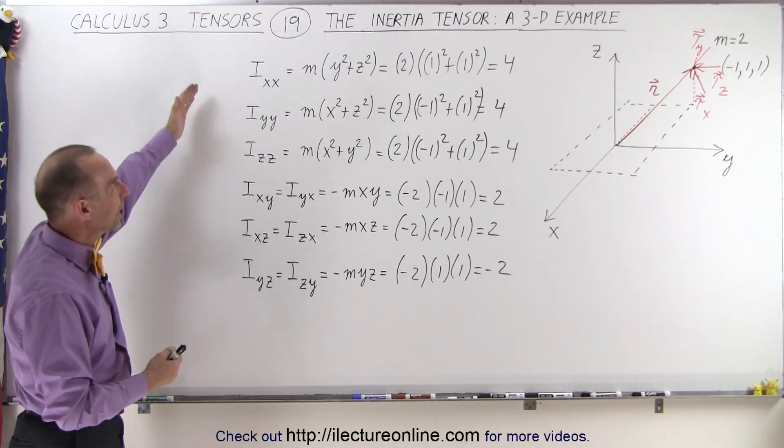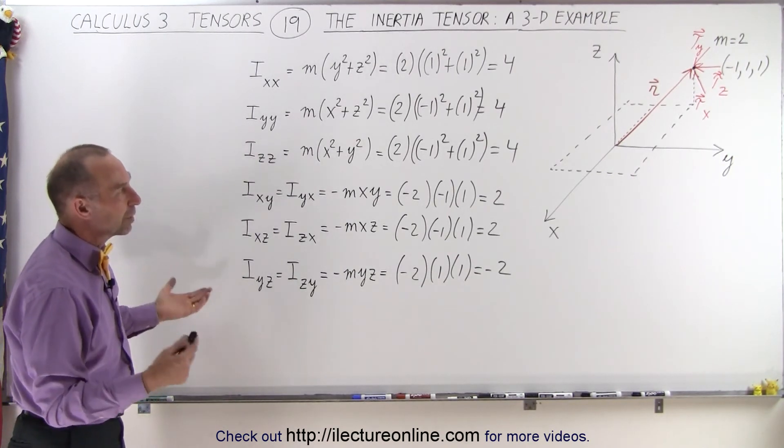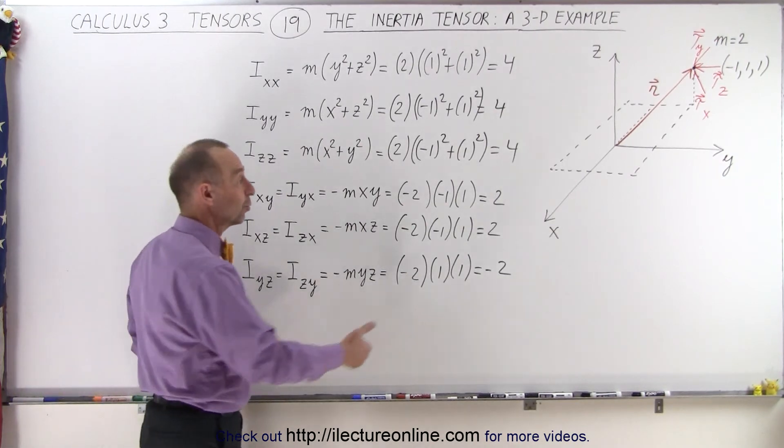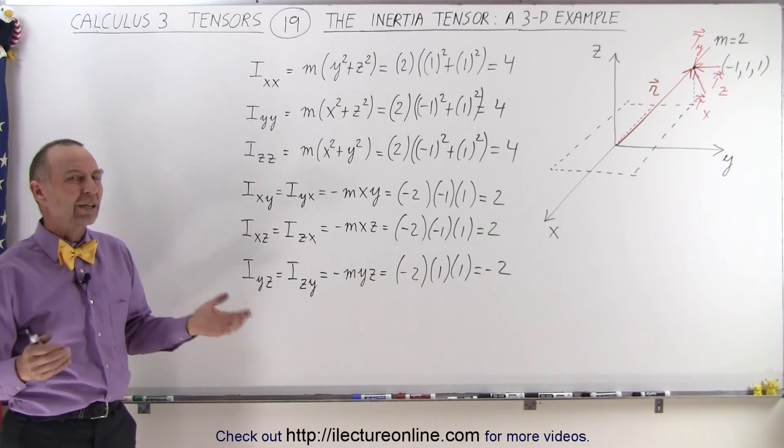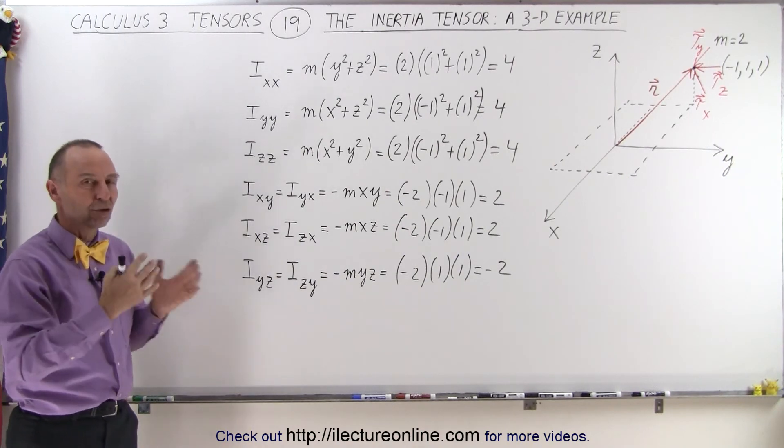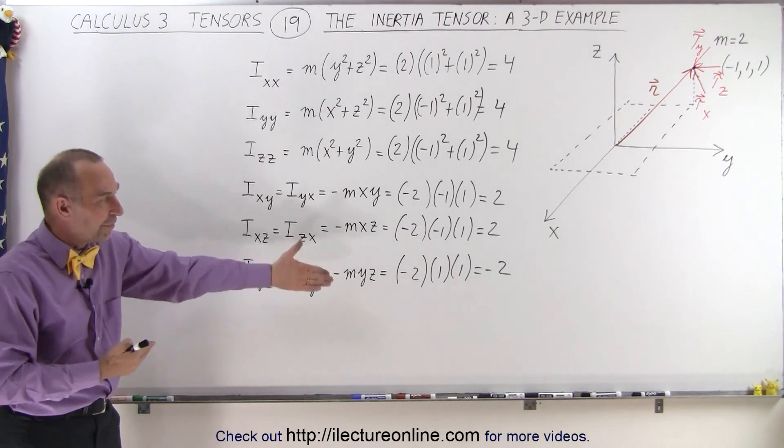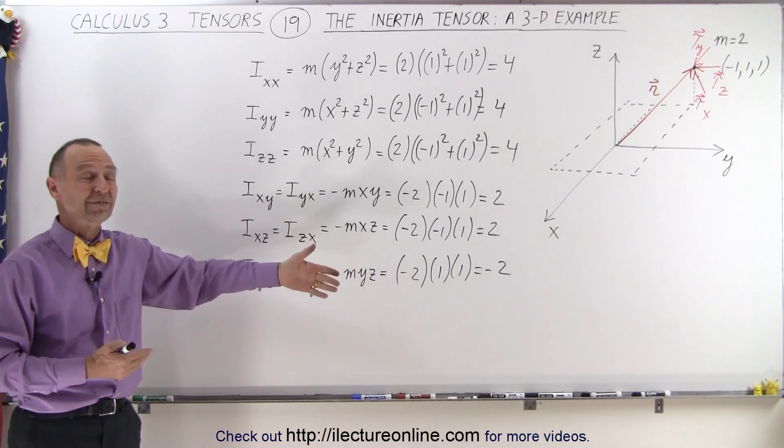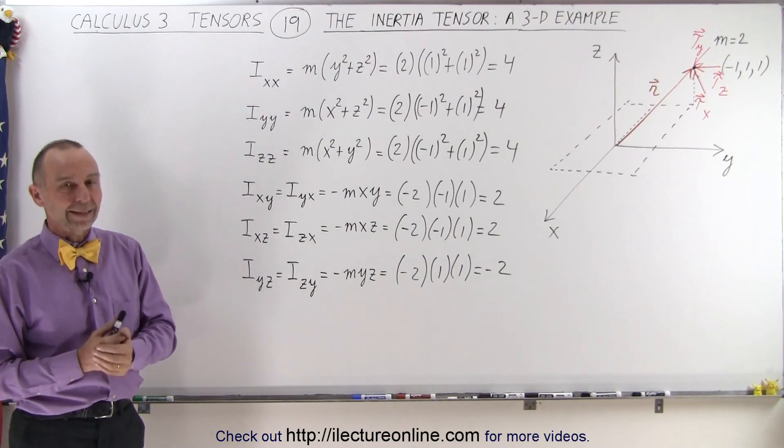So those are the elements, all 9 elements, of the inertia tensor when we have a 3-dimensional situation. And notice we have values for every off-diagonal element. So in the next video, we're going to lay that out and show you what that really means. What do we mean by the off-diagonal elements? They all have a value. Some are positive, some are negative. So let's try to make some sense out of it. We'll show you how to do that on the next video.